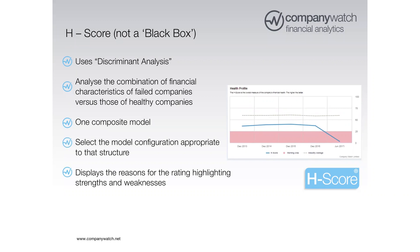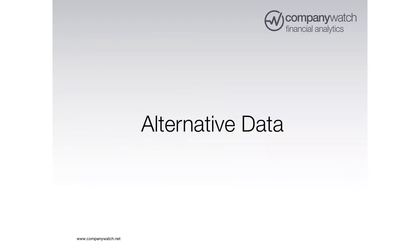We put all those models together into one composite model and output a score between zero and 100. The score represents the quantile function of the population: a score of zero means essentially all companies in your sector are stronger than you financially, and a score of 100 means you're the strongest company. That's a quick overview of what people do historically in financial credit risk models. Now I'll hand over to my colleague Phil to talk about alternative data and alternative methods.